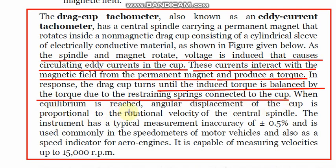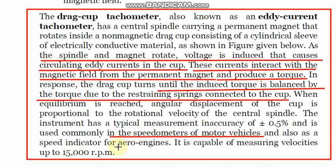When equilibrium is reached, the angular displacement of the cup is proportional to the rotational velocity of the central spindle. This instrument is implemented in the speedometers of motor vehicles and also as a speed indicator for aero engines.